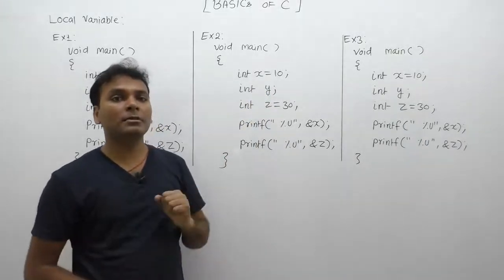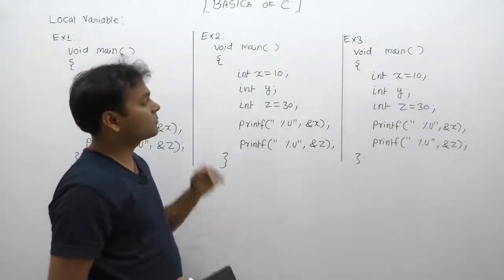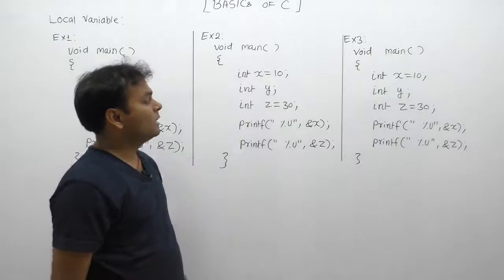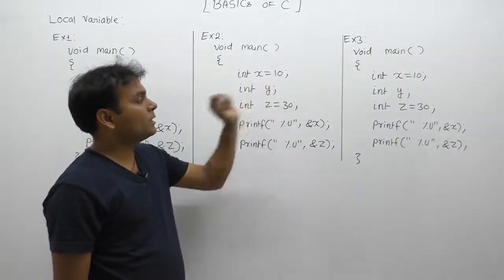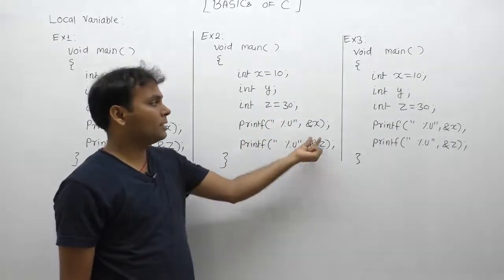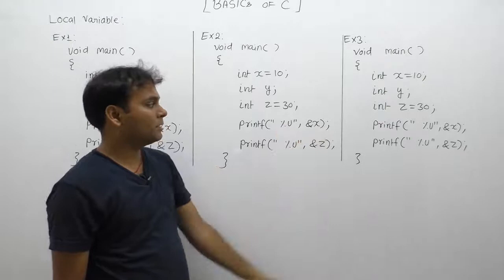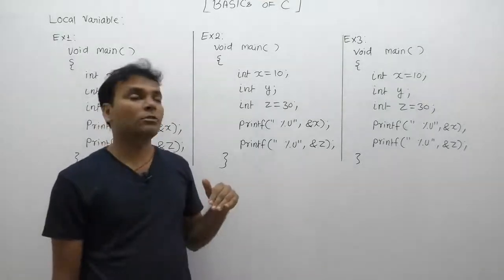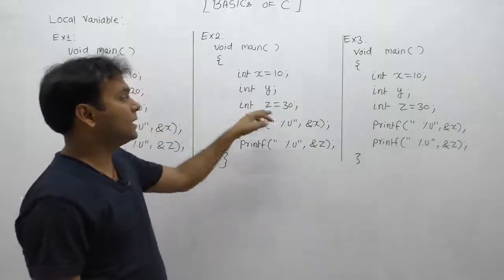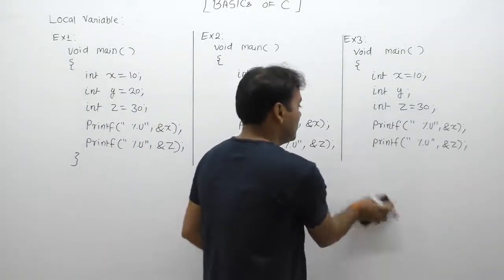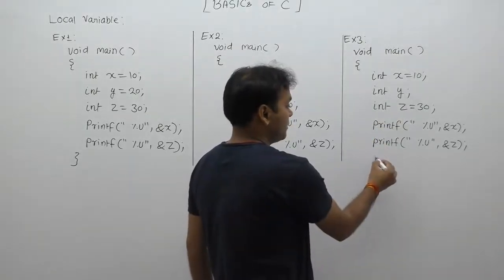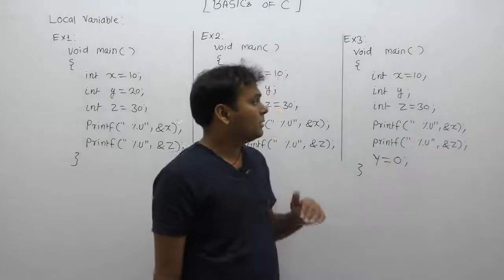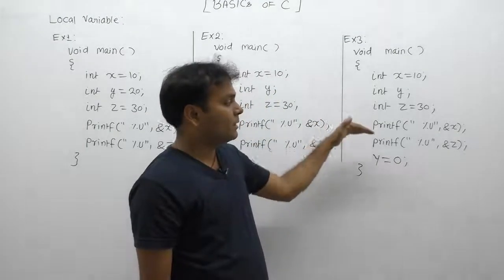In the second case, we are also declaring three variables x, y, z. But memory space will be allocated only for used variables. Here, we are using only x for storing 10 and z for storing 30. We are using x and z for display purposes as well, but we are not using variable y throughout this program. Therefore, memory space will be allocated only for x and z.